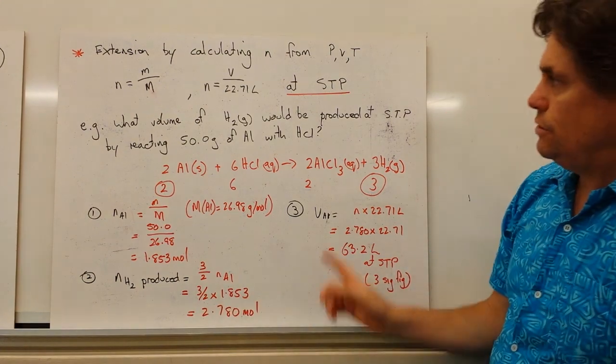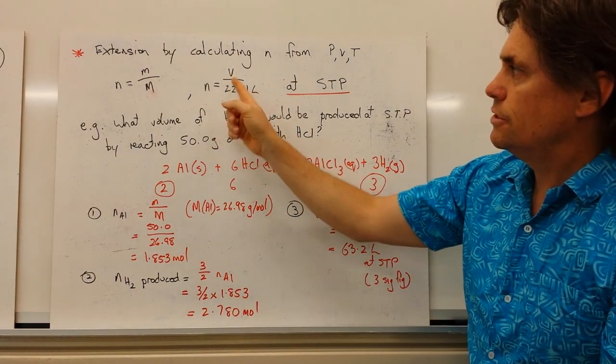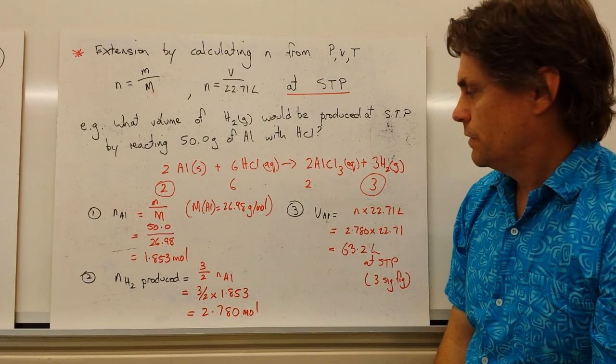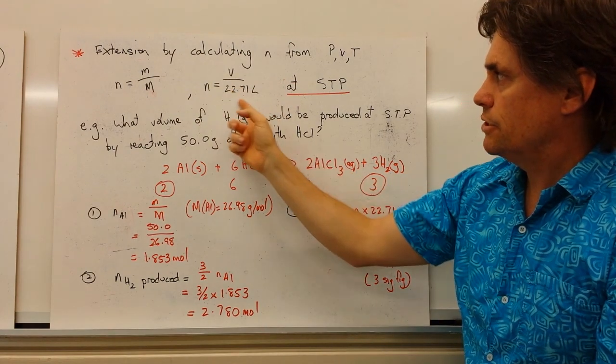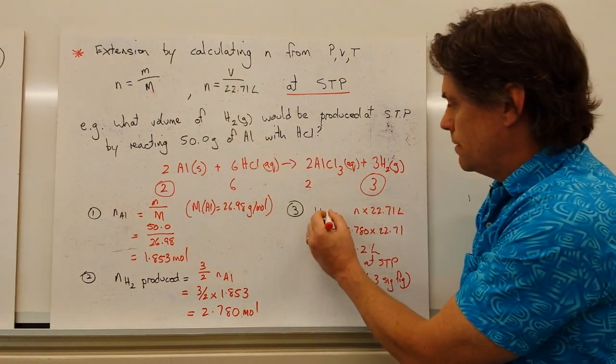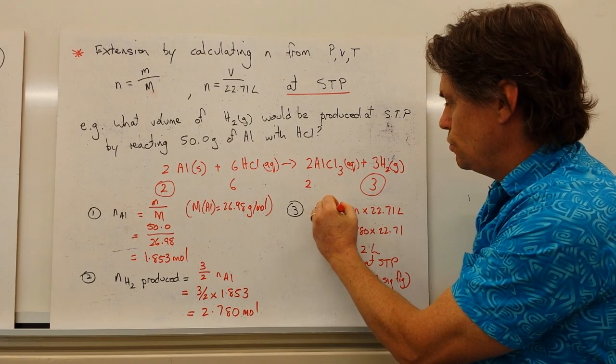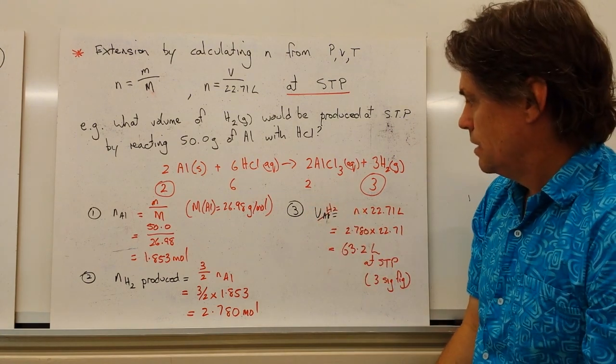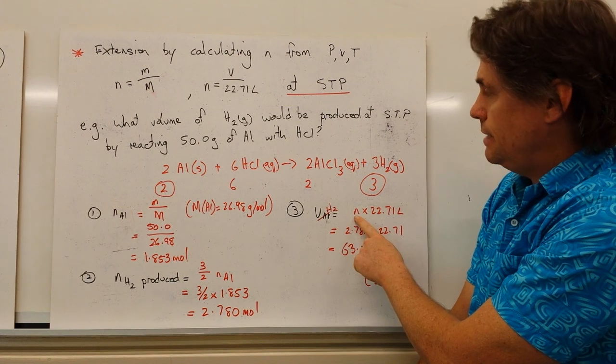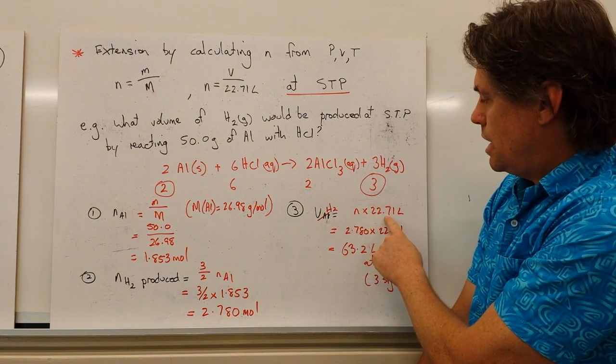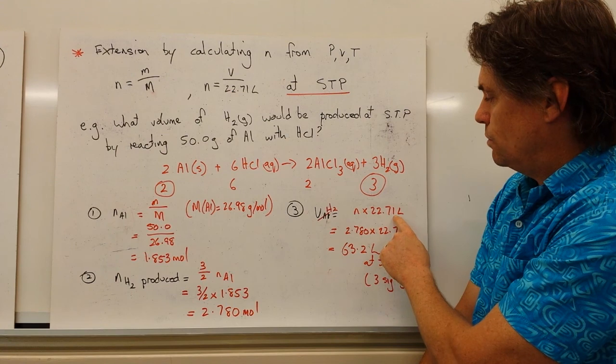So what we now need to use is the second equation to determine our volume. So if we rearrange this equation for volume, we get the volume of H2, not aluminium, will be equal to N, the number of moles, times our molar volume, 22.71.